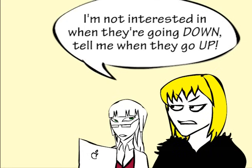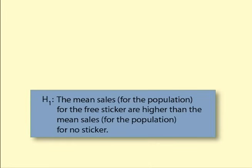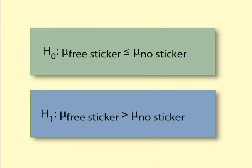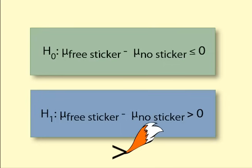If Helen was sure that sales would not go down and was only interested in whether they went up or stayed the same, the hypotheses would look different. H1 would state that the mean sales for the population for the free sticker treatment are higher than the mean sales for the no sticker treatment. Written in mathematical terminology, this can be rearranged if Helen is looking for evidence that sales will increase due to the free sticker. This is called a one-tailed test or a directional hypothesis — it has a greater-than sign in it. We will stick to the two-tailed test for now.